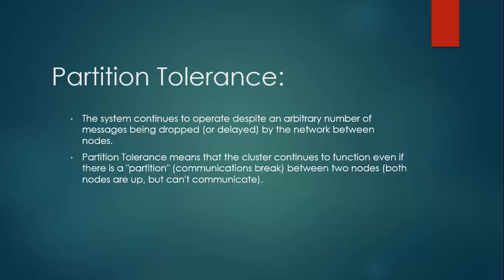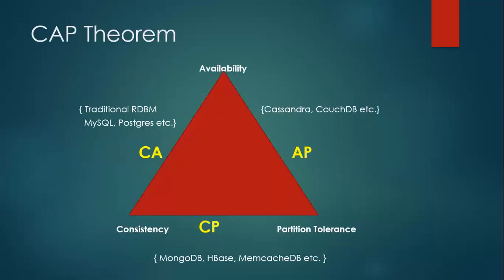Let me go back to the CAP theorem slide. Have a look at this diagram. The first one is CA — consistency and availability — all traditional databases fit into this, like Postgres, MySQL, etc. The second one is AP — availability and partition tolerance. If you require availability and partition tolerance, then Cassandra and CouchDB provide both functionalities. You can choose Cassandra, CouchDB, and various other database solutions available in the market that provide both availability and partition tolerance.